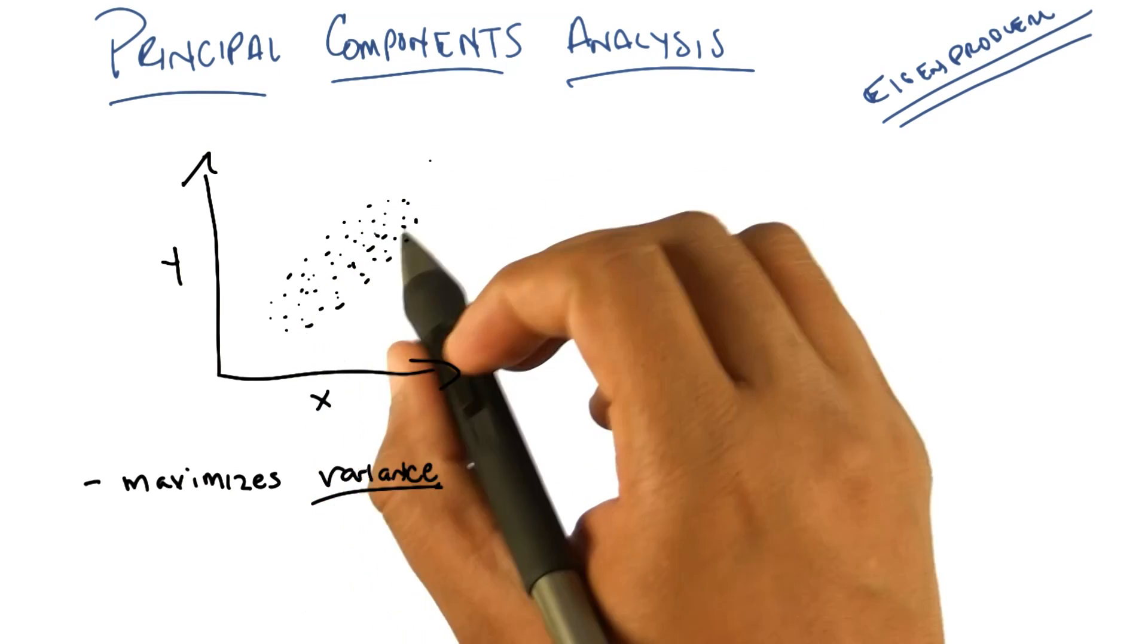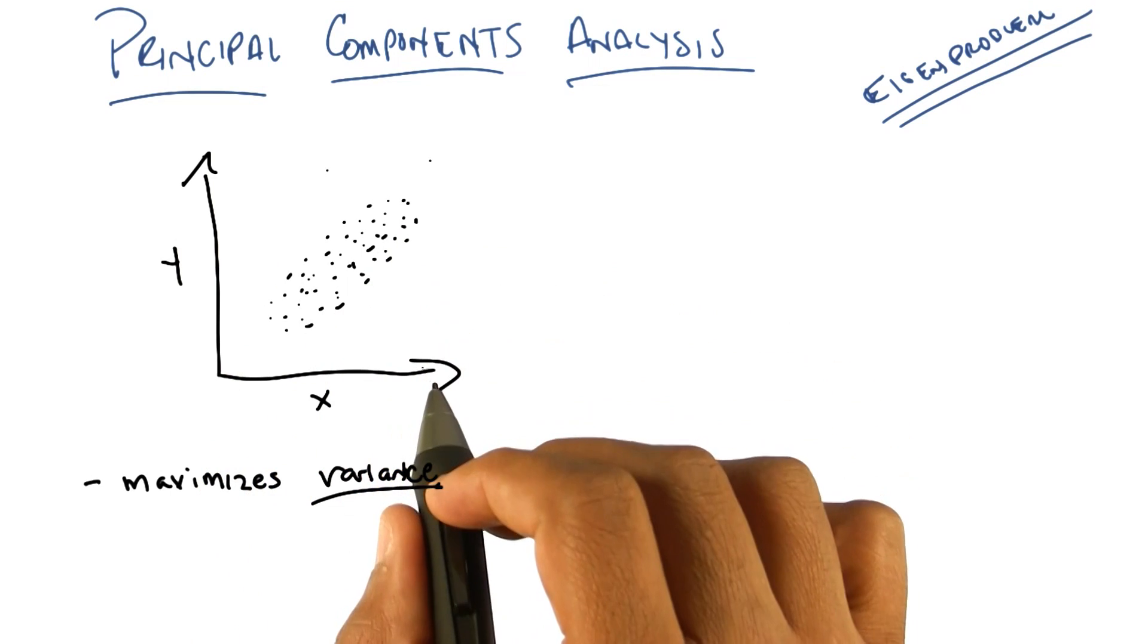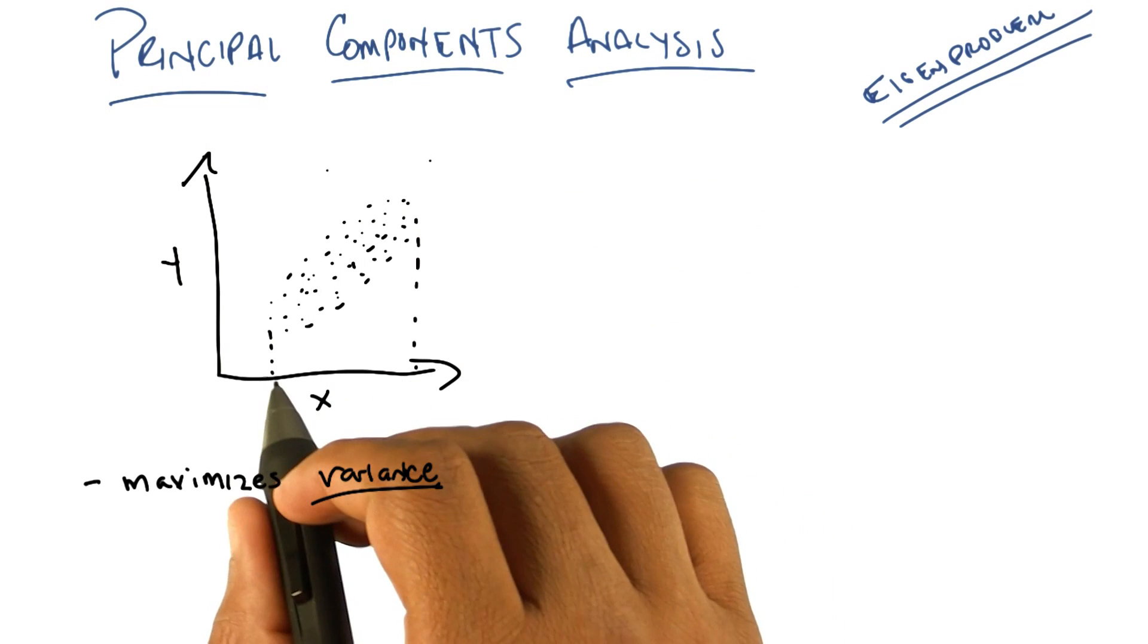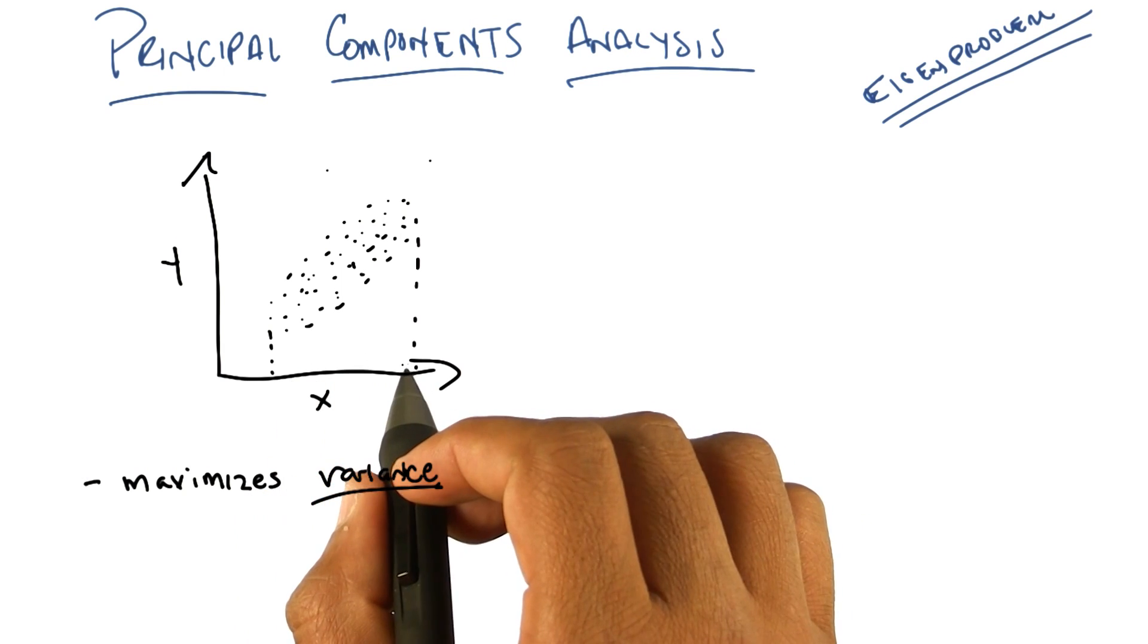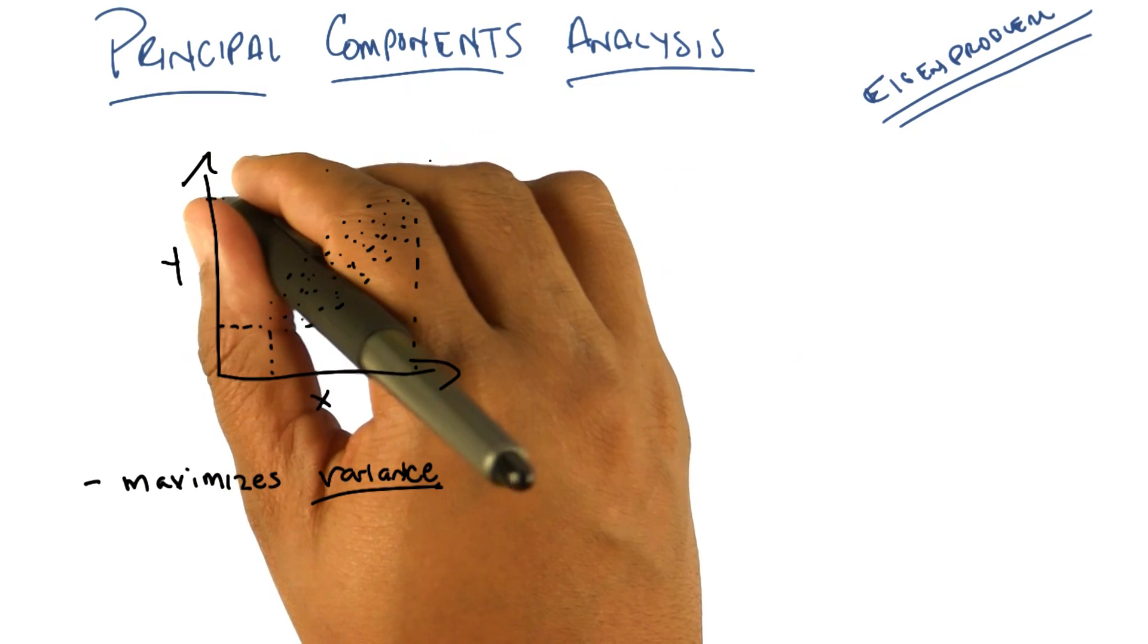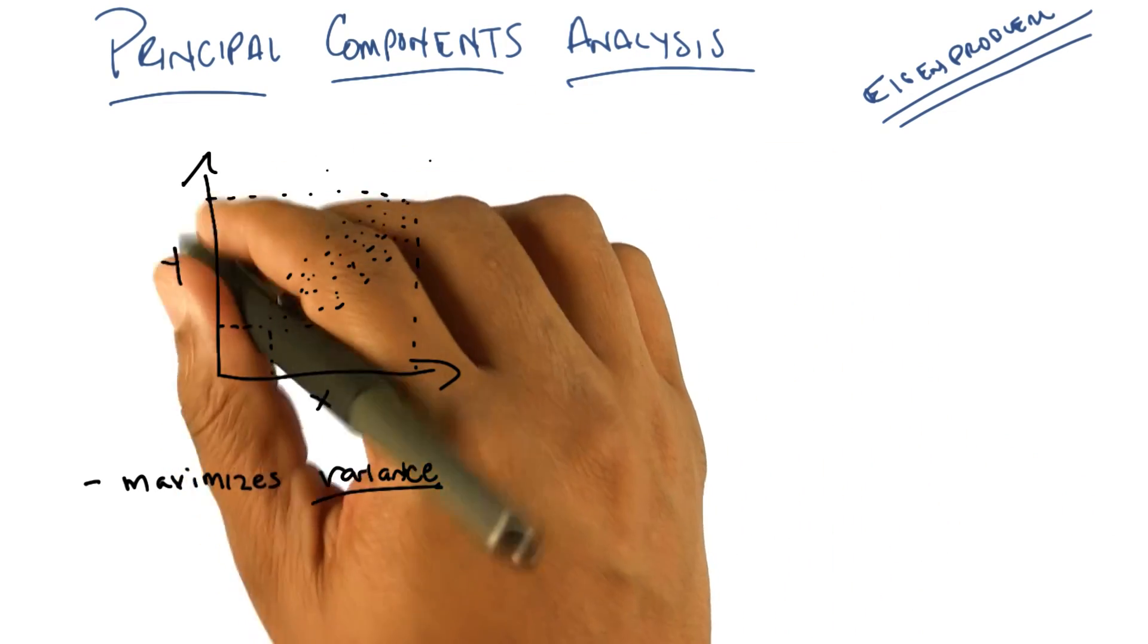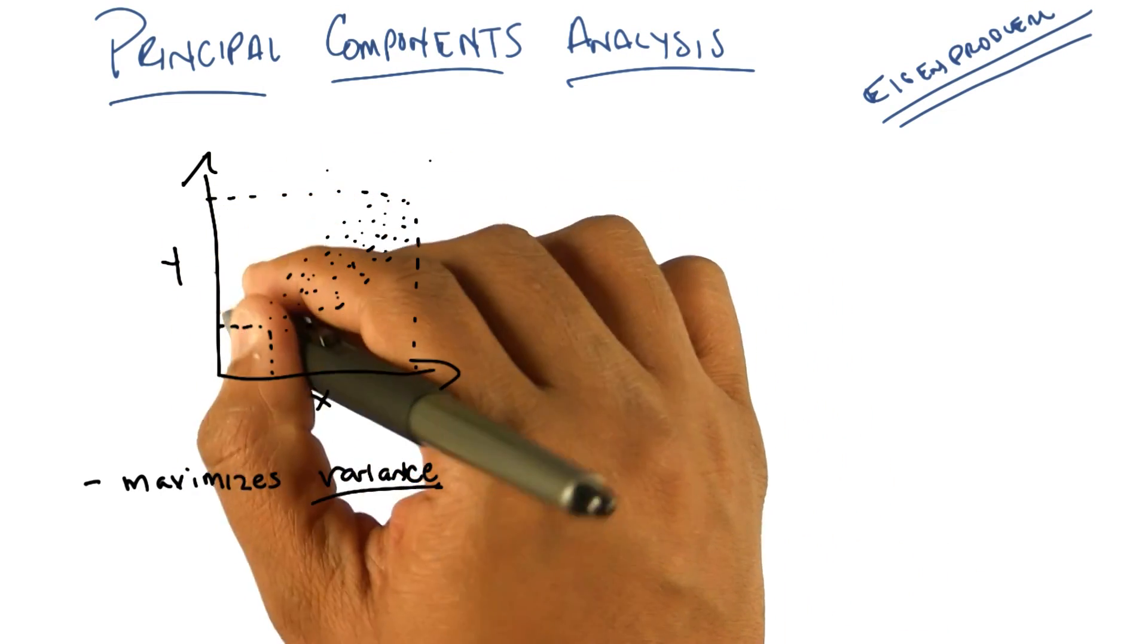And to see that, imagine that we projected all of these points onto just the x dimension. That's the same thing as just taking that particular feature. Well, if we projected all of them down, we would end up with all of our points living in this space. And when we compute the variance, the variance is going to be something that captures the distribution between here and here. Does that make sense? Similarly, if we projected it onto the y-axis, which is the equivalent of... Those are examples of feature selection. Yes, exactly right. It's equivalent of just looking at the second feature here, y. I'm going to end up having a variance that spans this space between here and here.